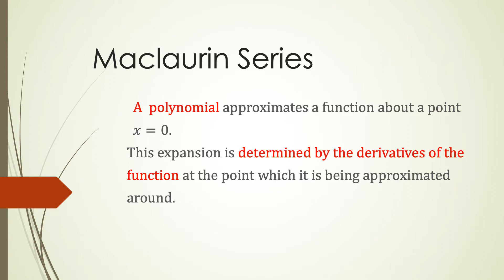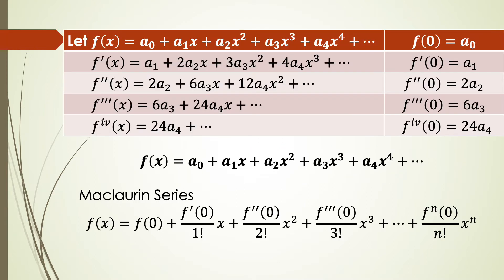The Maclaurin series is a polynomial approximate function above a point at x equal to 0. This expansion is determined by the derivative of the function at the point approximated around x equal to 0. We use the Maclaurin theorem to get the expansion of the function f.